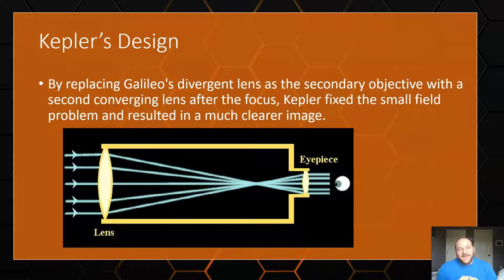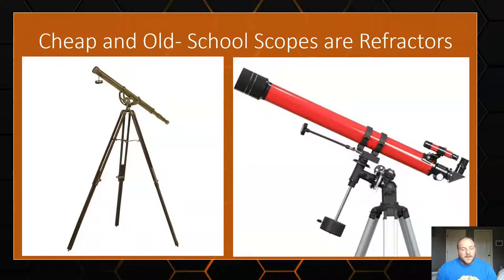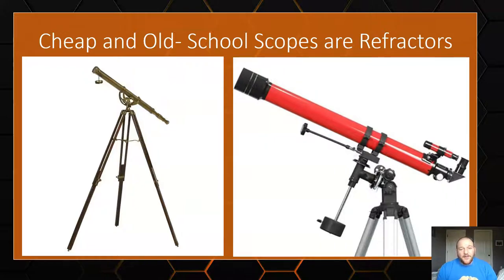This type of scope — the refracting telescope using lenses — is the modern day refractor, and it's what we've used ever since. Typical refracting telescopes fall into two categories: either traditional old-school designs like Galileo's, or relatively cheap scopes you could buy at Walmart. But there are some amazing refractors out there. Spotting scopes used regularly — whether a rifle scope, a bird-watching scope, or binoculars — are all refractors.